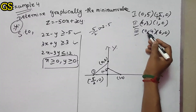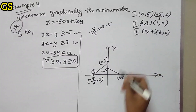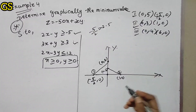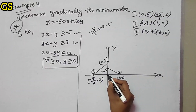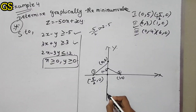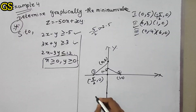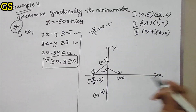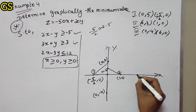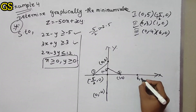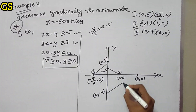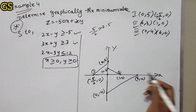Next, for the third constraint, the points are (0, minus 4) and (6, 0). The x-axis value is 0 and y-axis is minus 4. Then the x-intercept is 6 and y is 0. So these two points form the third constraint line.